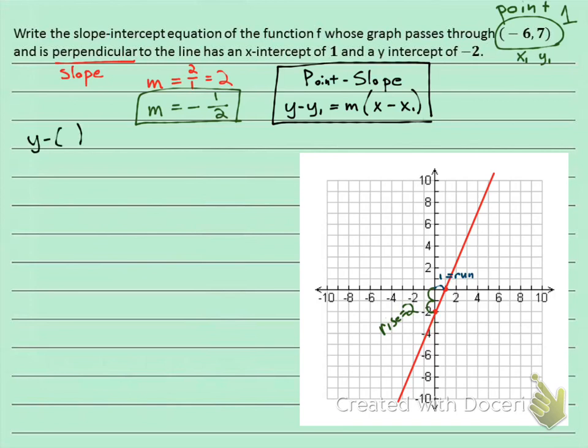y minus y1 equals m times x minus x1. Okay, up at the top right, I said my y1 is 7. My m is negative 1 half. And my x1 is negative 6. Okay, so for this line to be in point-slope form, it's kind of in point-slope form. I'm not going to leave minus a negative. Minus a negative is the same as a plus. So I'm going to clean that up a little bit.